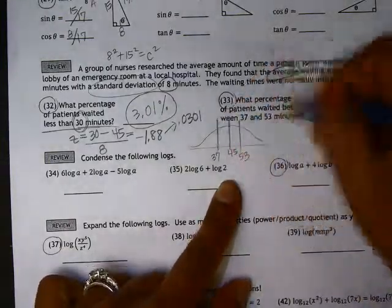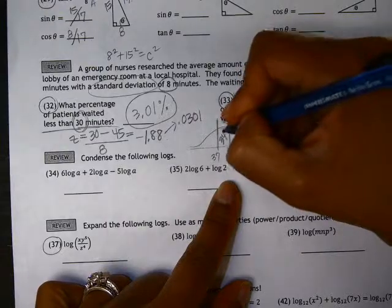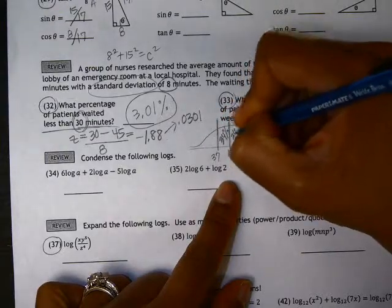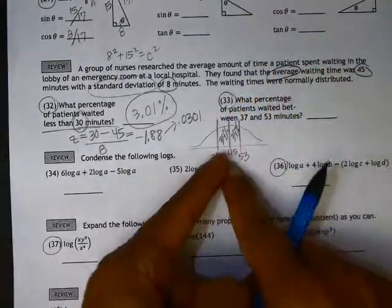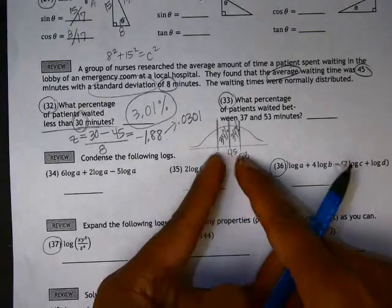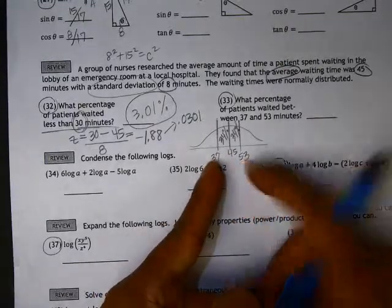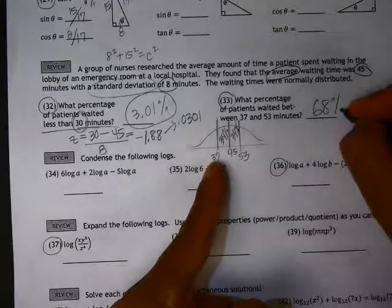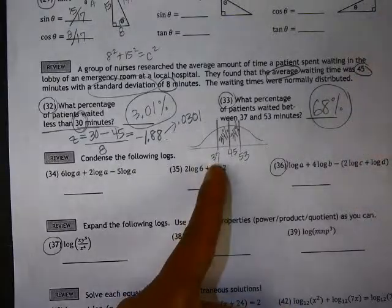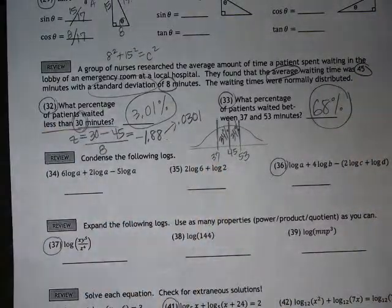As part of the normal distribution, we know that these percents are both 34%. So the total percentage of patients that waited between these two amounts of minutes is 68%.